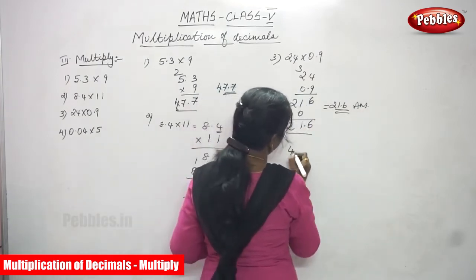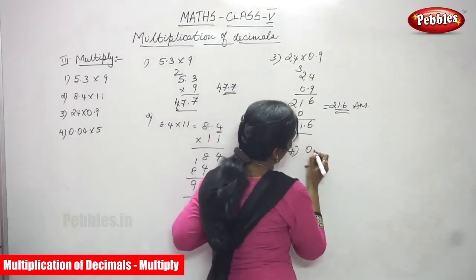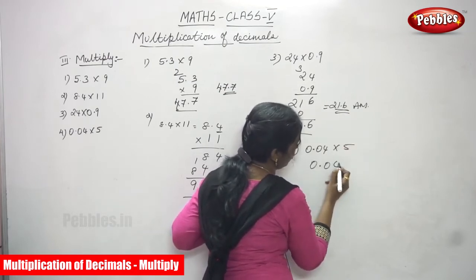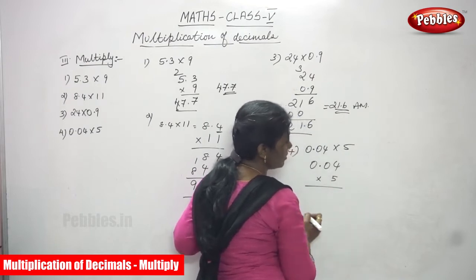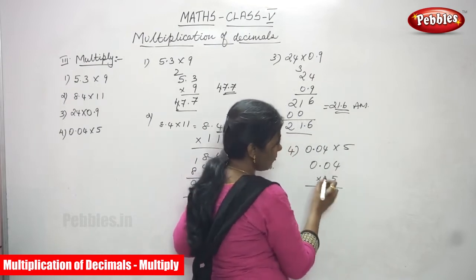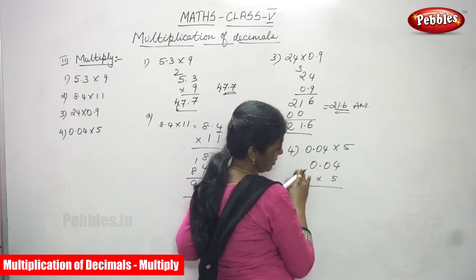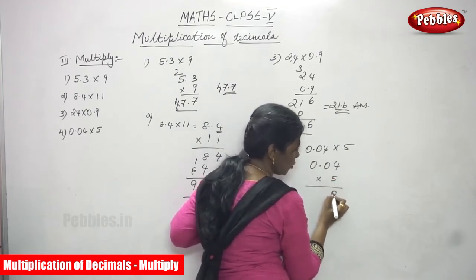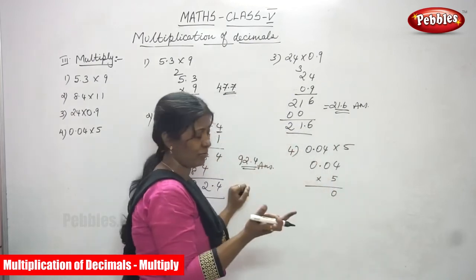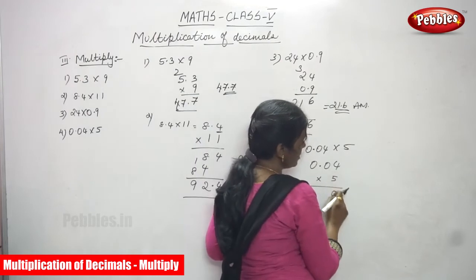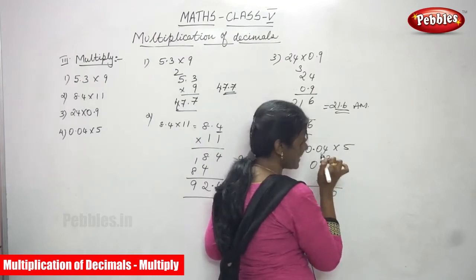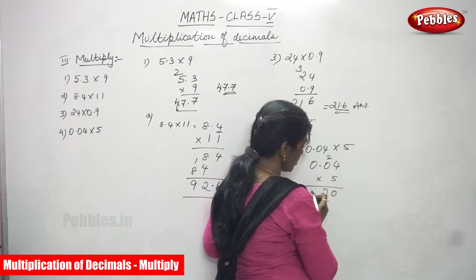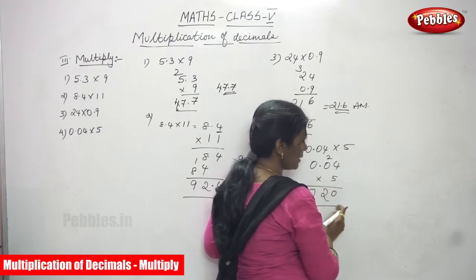The fourth sum is 0.04 into 5, decimal with whole number. Start with the decimal part. In 0.04, the 4 is in the hundredths place. So 4 times 5 is 20, write 0 carry 2. Then 0 times 5 is 0, plus 2 is 2. Then 0 times 5 is 0.